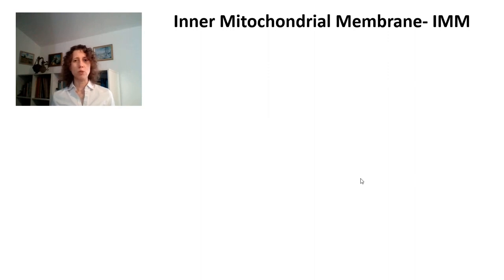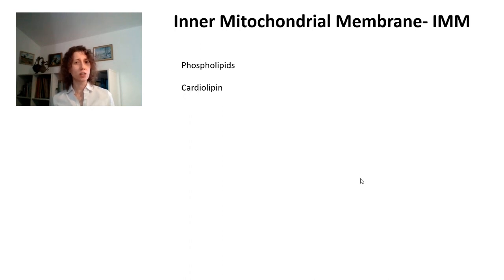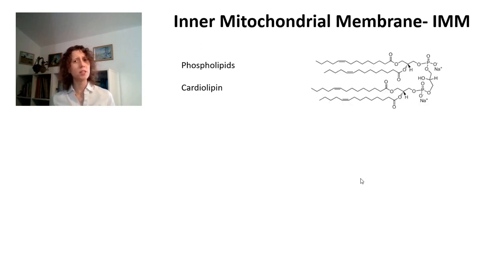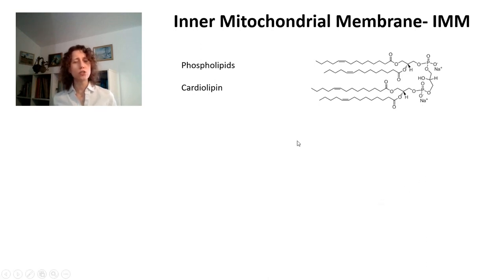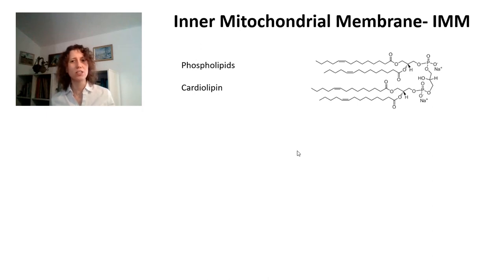The inner mitochondrial membrane, like most membranes in the cell, is formed by phospholipids, but it has a specific phospholipid, cardiolipin, in quite large quantities. Around 20% of the phospholipids of the inner mitochondrial membrane are cardiolipin. Cardiolipin is a very special phospholipid in which, in addition to two carbon acyl chains, the phospholipid head also binds to two more acyl chains, so you have a total of four acyl chains.